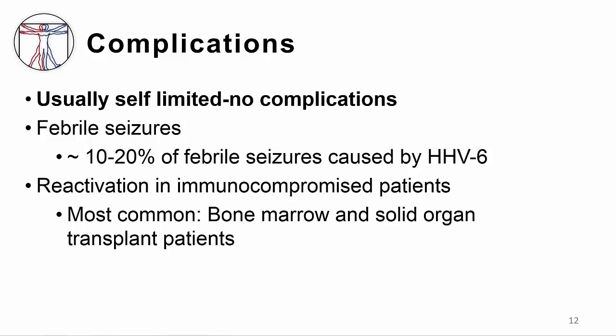Reactivation occurs in immunocompromised patients. Approximately 20 to 50% of immunocompromised patients have reactivation of HHV6, with the highest rates seen in bone marrow transplant and solid organ transplant patients. Most reactivations are asymptomatic but can cause transplanted organ dysfunction, bone marrow suppression, central nervous system dysfunction, pneumonitis, and hepatitis.